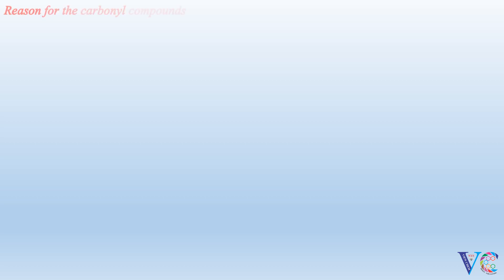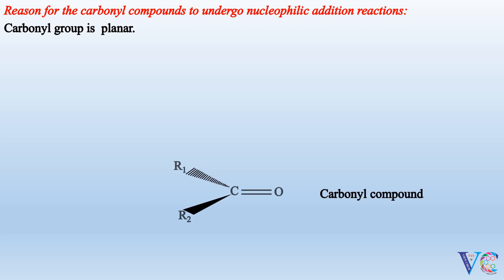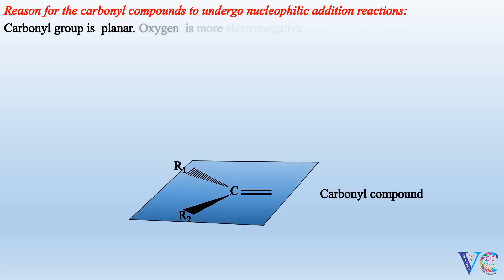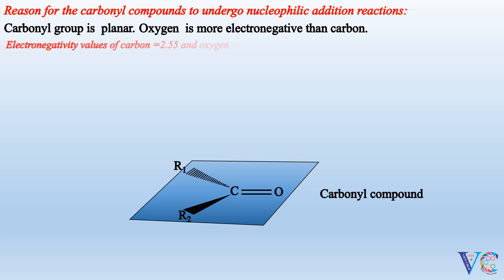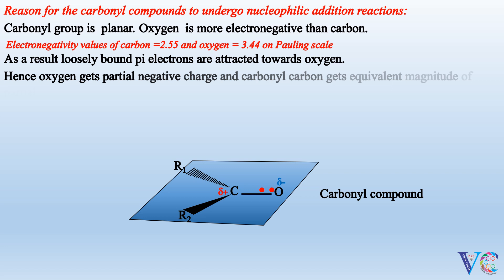The reason for carbonyl compounds to undergo nucleophilic addition reactions: The carbonyl group is planar. Oxygen is more electronegative than carbon — electronegativity values are 2.55 for carbon and 3.44 for oxygen on the Pauling scale. As a result, loosely bound pi electrons are attracted towards oxygen. Hence, oxygen gets a partial negative charge, and carbonyl carbon gets an equivalent magnitude of partial positive charge.